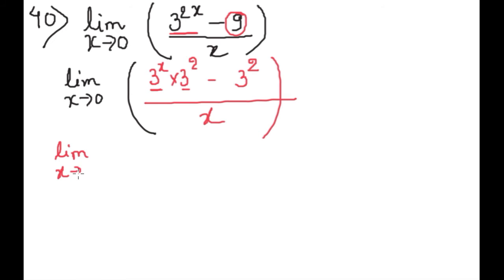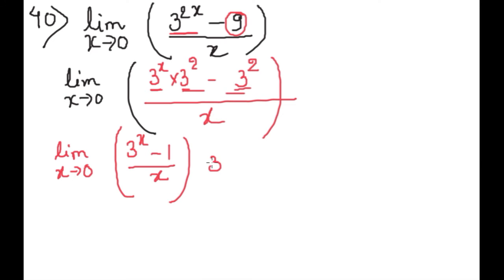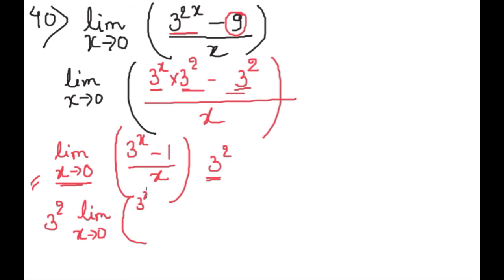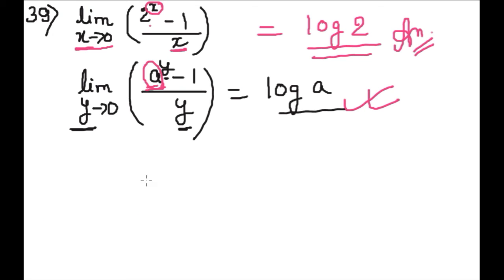Limit of x is 0. यहां से हम 3 square common ले सकते हैं: 3 to the power x minus 1 by x. 3 square को common लिया, अब 3 square को हम बाहर लिख देंगे limit के, क्योंकि इसमें x नहीं है और limit x की है. Limit of x is 0, 3 to the power x minus 1 by x. (Factor out 3² outside the limit, leaving lim(x→0) (3^x − 1)/x.)